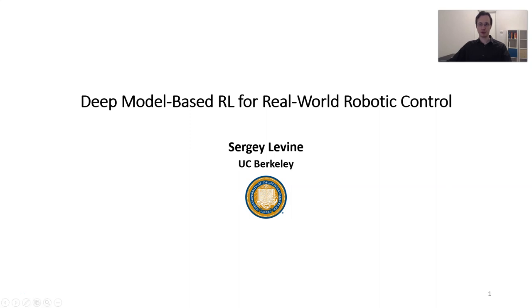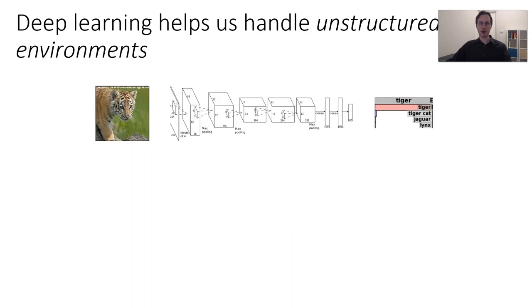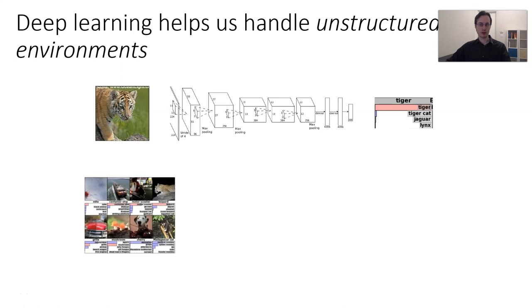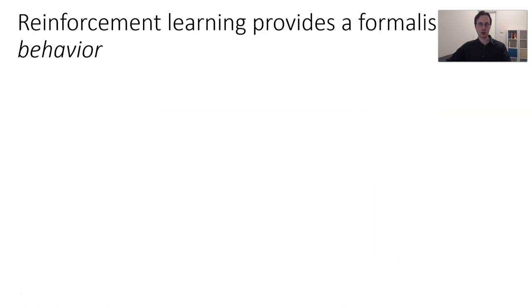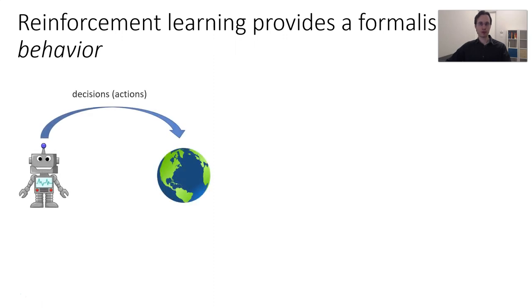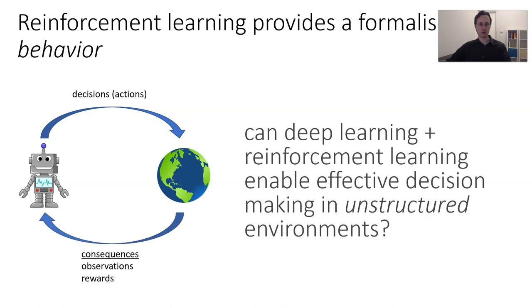My name is Sergey Levin and today I'm going to talk about deep model-based RL for real-world robotic control. Deep learning helps us handle unstructured environments, from image recognition to translation to speech recognition. And reinforcement learning provides a formula for behavior. In RL we have an agent that makes decisions and the world responds with consequences, observations, and rewards. So we might think that deep learning plus reinforcement learning could enable effective decision-making in unstructured settings.